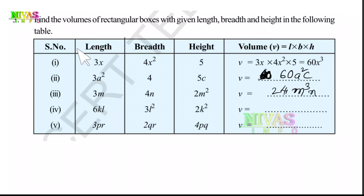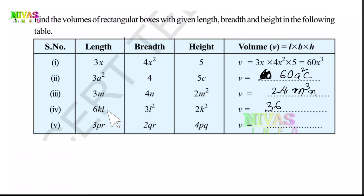Next, coefficient 6 into 3 is 18, 18 into 3 is 36. For the variables: KL, L, and K squared — K into K squared is K cubed. Then L squared into L gives L cubed. So the answer is 36K³L³.